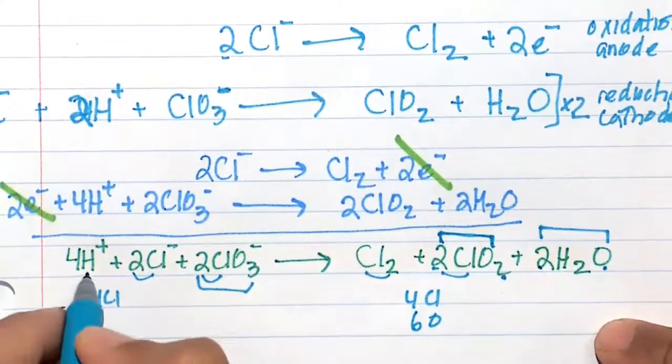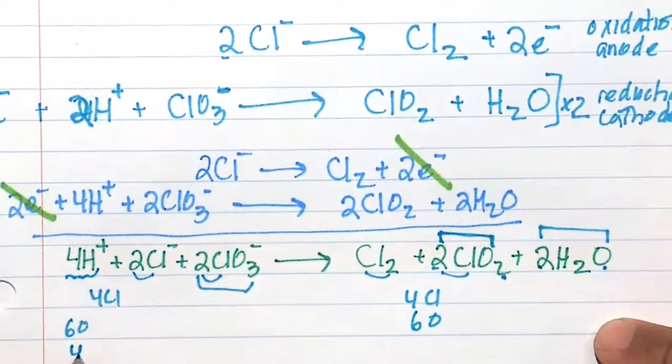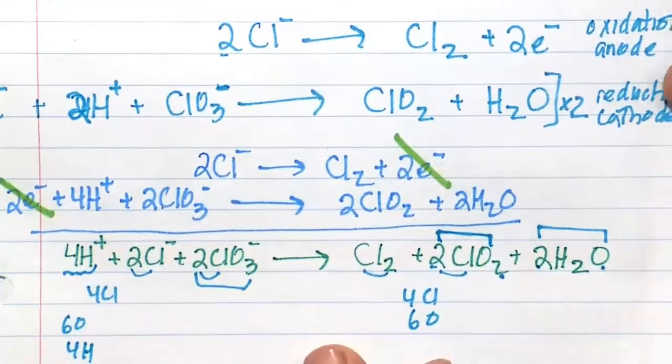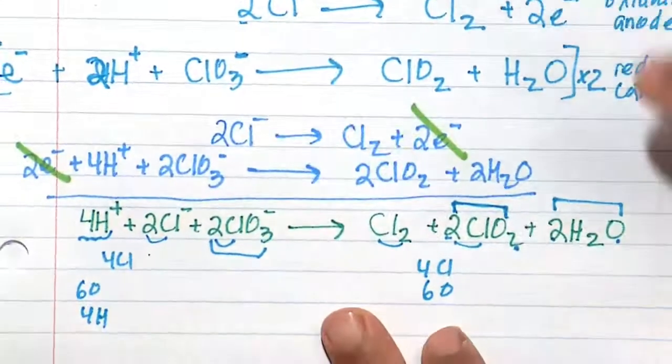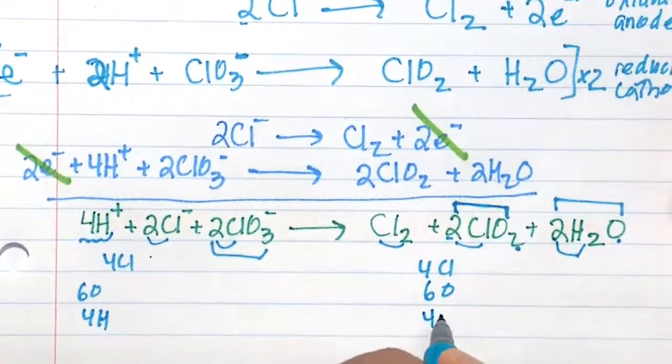And then my hydrogens. Here I see 4 hydrogens and here I also see 4 hydrogens. Okay, so far so good.